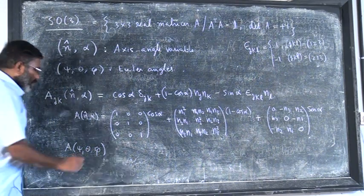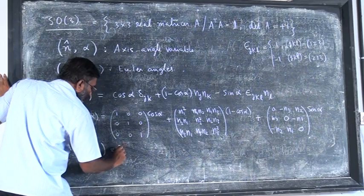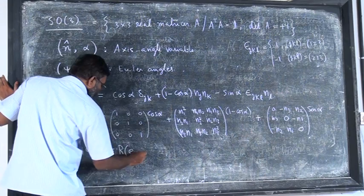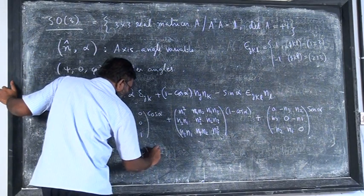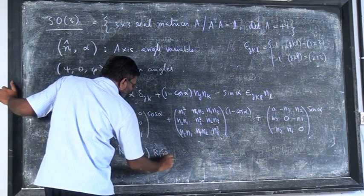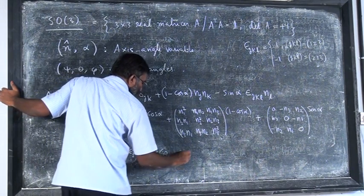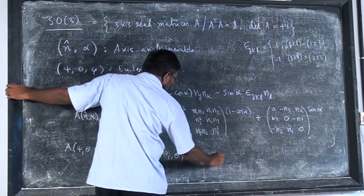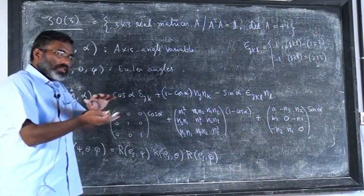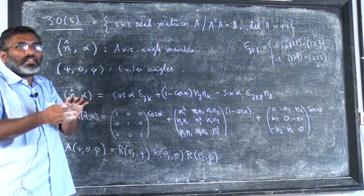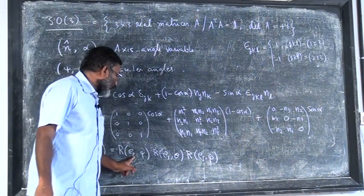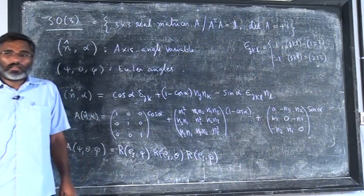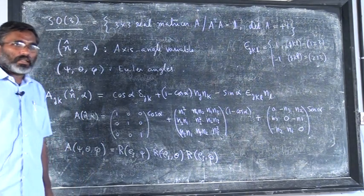You can also write the matrix in terms of psi, theta, phi in Eulerian angles. This is a rotation matrix about the e3 axis by angle psi, a rotation matrix about the e1 axis by angle theta, and a rotation matrix about the e3 axis by angle phi. You first rotate about the z-axis, then about the new x-axis, then about the new z-axis — by writing these rotation matrices you get the matrix corresponding to Eulerian angles.